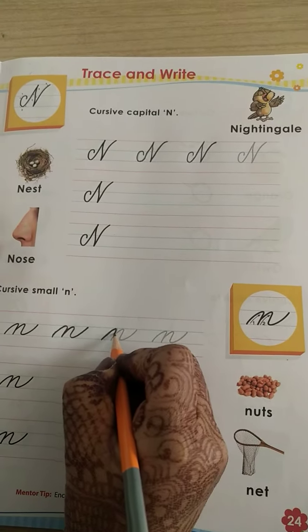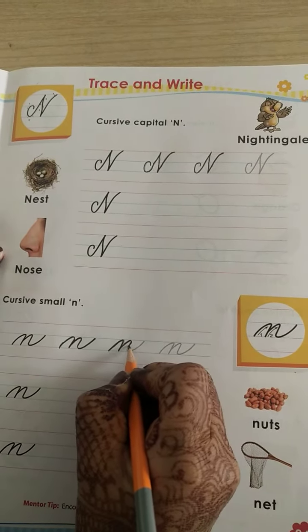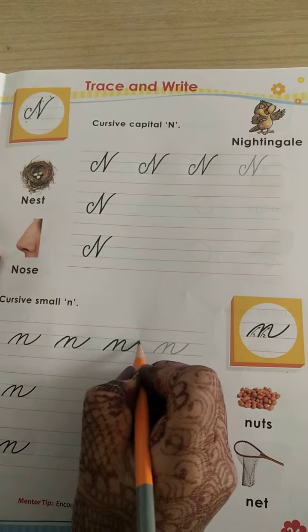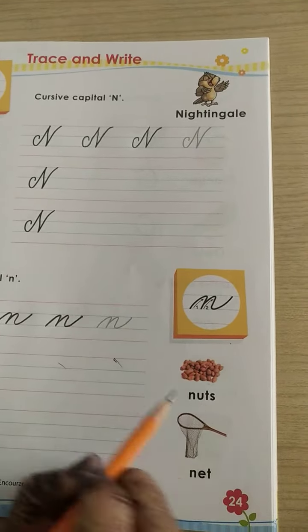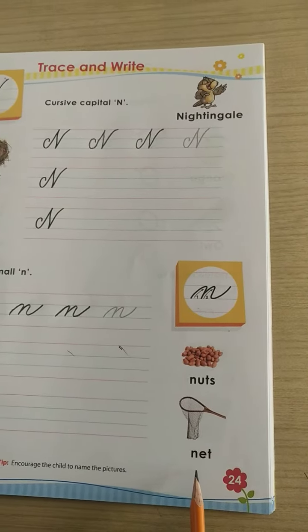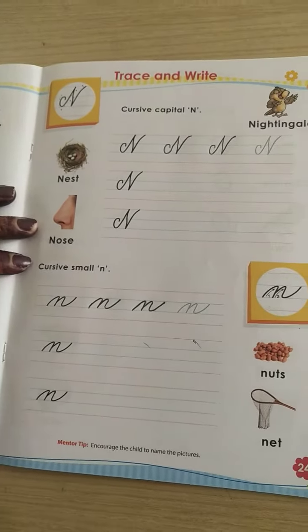We have to start, go up, come down, again up and down, and then with a curve we have to end it. N for nuts, N for net. One more time I will show you on the board how to write.